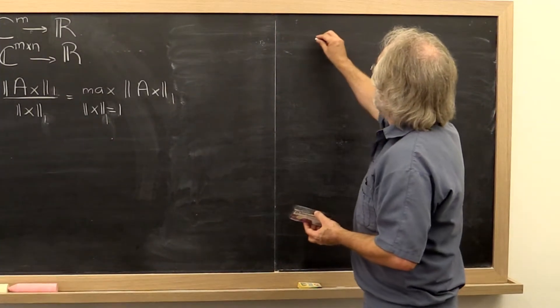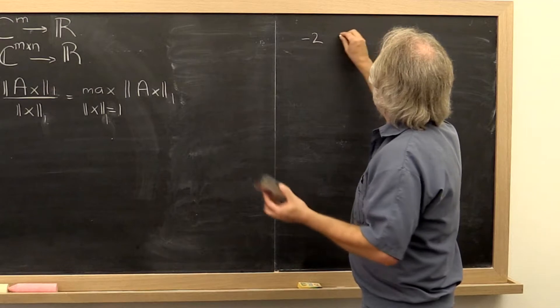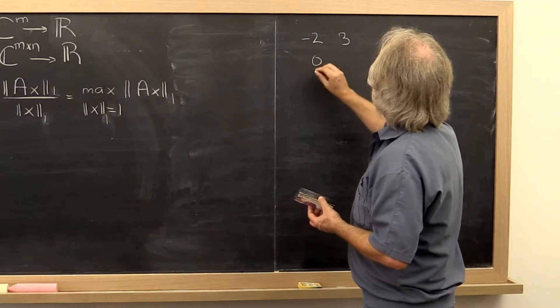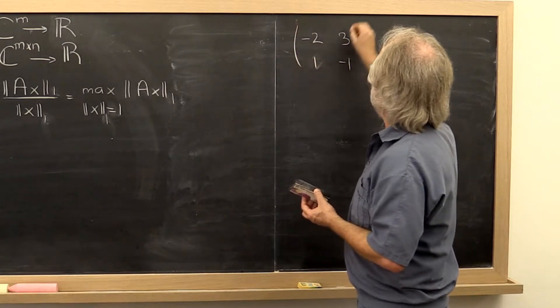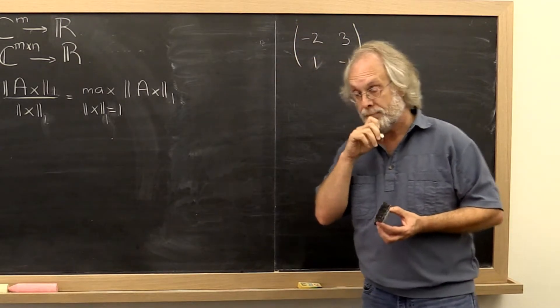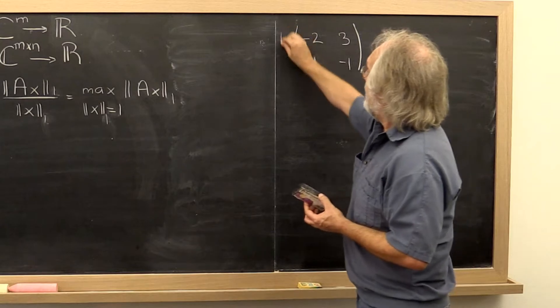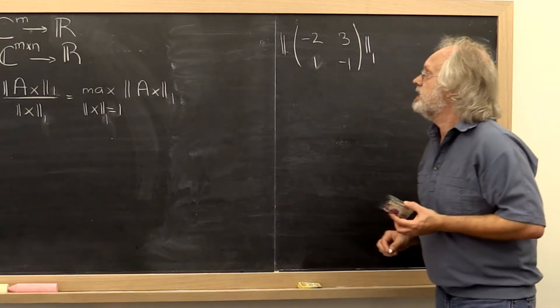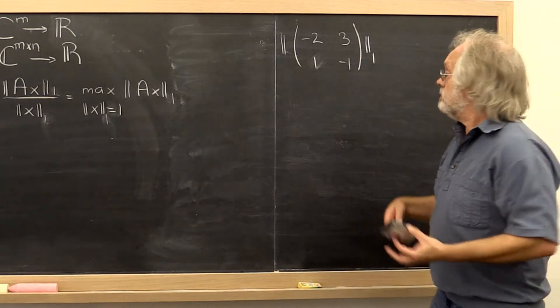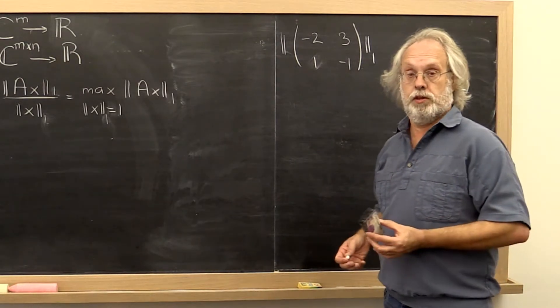Okay, well, let's take an arbitrary matrix. Let's make this 1 minus 1. If you want to evaluate the matrix 1 norm, it turns out there is a very simple formula for this.